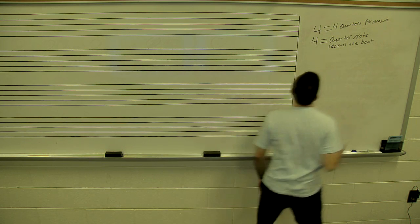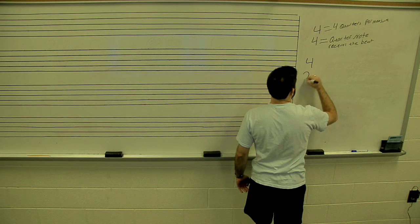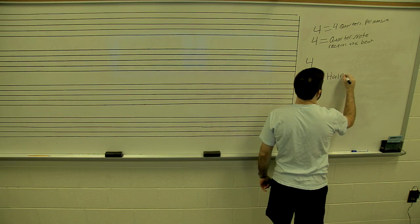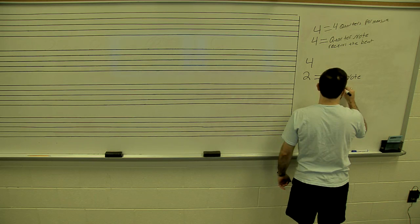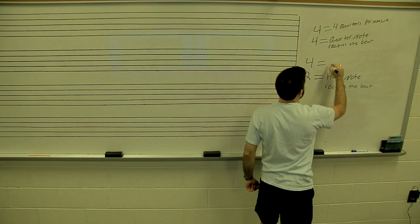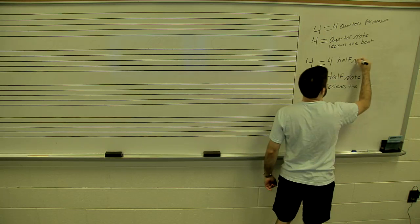And the top number 4 tells us that there are 4 quarter notes per measure. In 4/2, the 2 at the bottom tells us that the half note receives the beat, and the top number tells us that there are 4 half notes per measure.